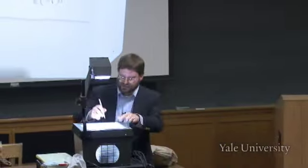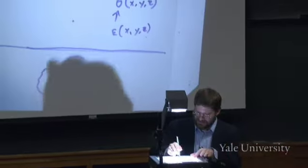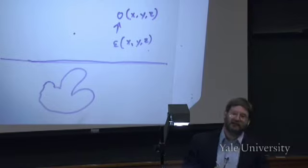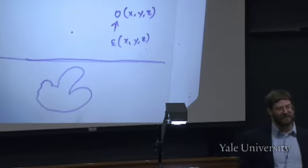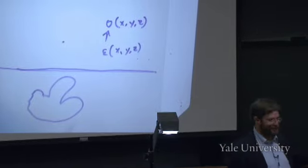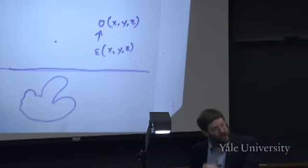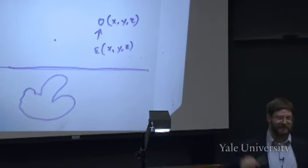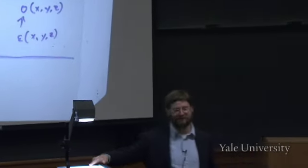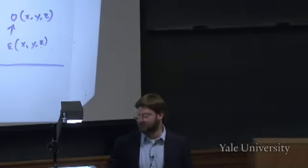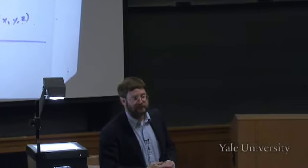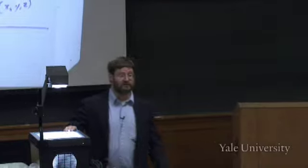The curvature of space is determined by gravity and by how much mass the universe contains. This relates back to Part 2 of the course — we'll be able to determine the curvature of space by measuring the mass density. And yes, that does imply that time moves differently in regions of different curvature.